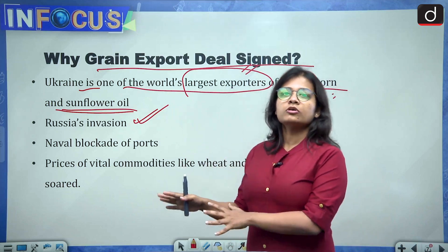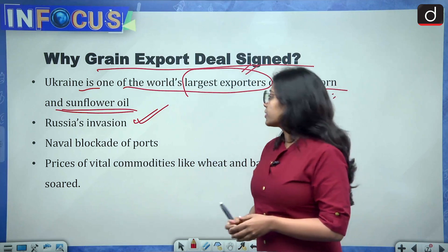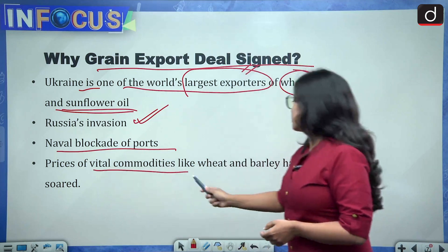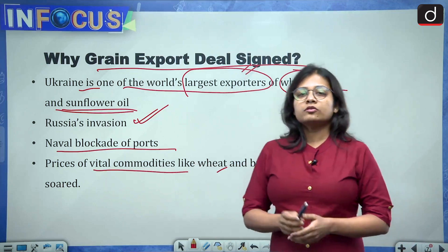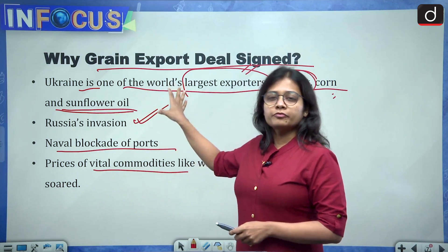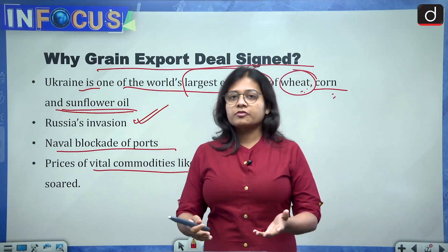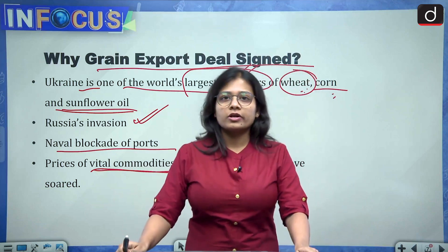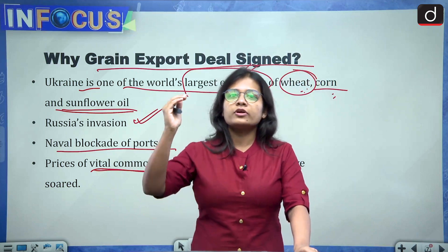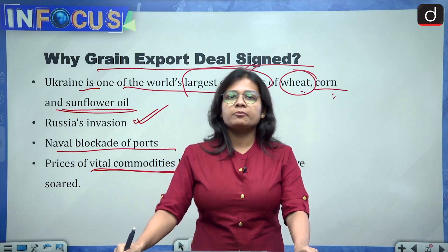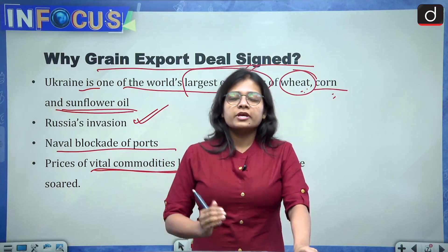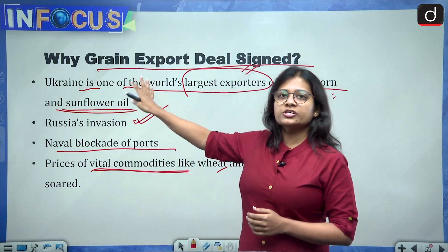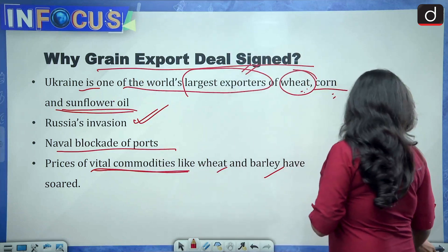The same goes with Russia also — Russia was not able to export wheat or fertilizer either, due to a naval blockade of ports. The prices of vital commodities like wheat and barley soared to new heights. Because there was no export from one of the biggest exporters of wheat, fertilizer and sunflower oil, people were not able to buy them easily. Nations totally dependent on Ukraine or Russia's exports suffered the most, and one of the examples is the African continent.